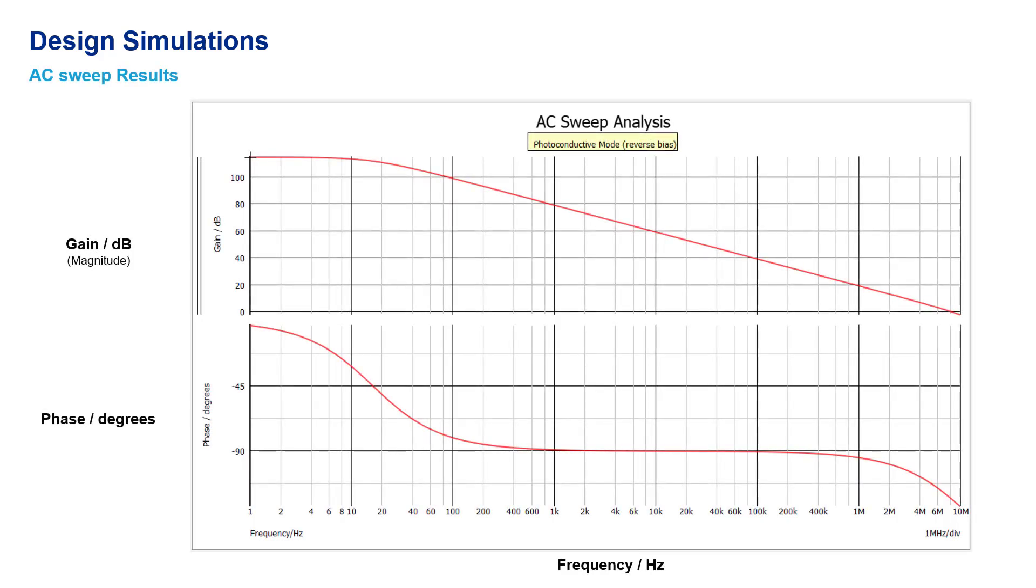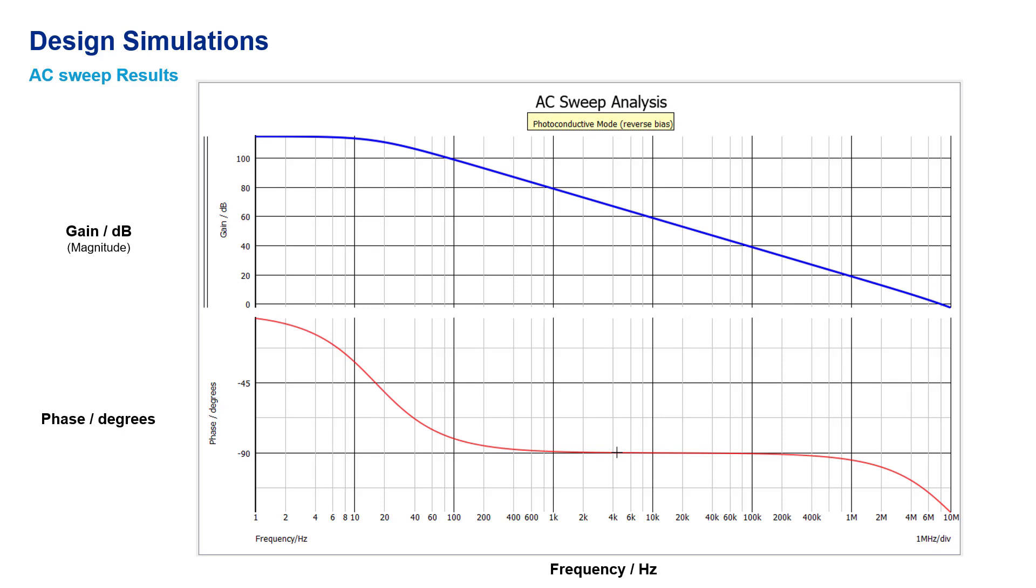Running an AC sweep analysis shows the small signal response of the circuit. The Bode plot graph on the screen represents the gain and phase of the circuit as a function of frequency. In this analysis, we found that the bandwidth of this circuit is 17.13 kilohertz.